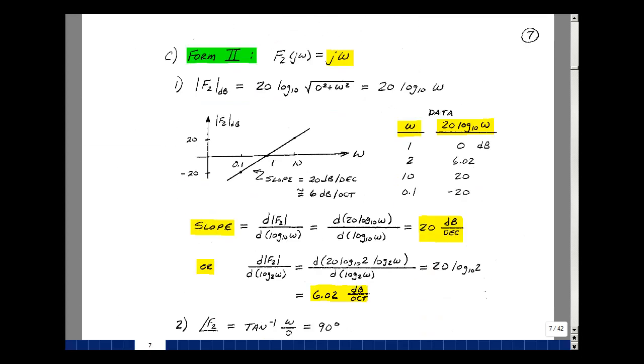For our next form, let's let F2 equal jω. The magnitude of F2 in dB is 20 log of the square root of the real part squared, which is zero, plus the imaginary part squared, which is just omega. That turned out to be 20 log base 10 of just omega. What does that look like? Let's take some data points.